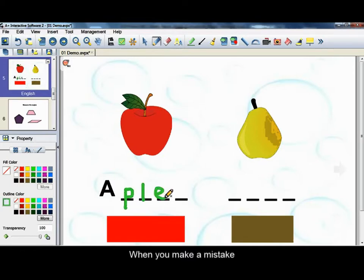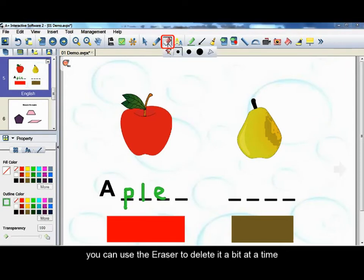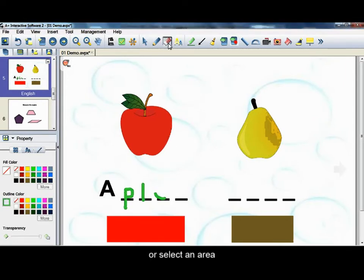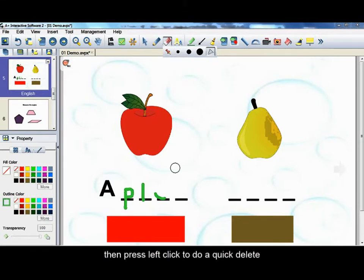When you make a mistake, you can use the eraser to delete it a bit at a time, or select an area, then press left click to do a quick delete.